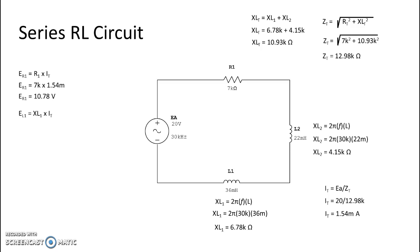I take the ohmic value of L1 which is inductive reactance and multiply it by current, and that's 6.78k multiplied by 1.54 milliamps and I get a voltage of 10.44 volts. I do the same for L2.